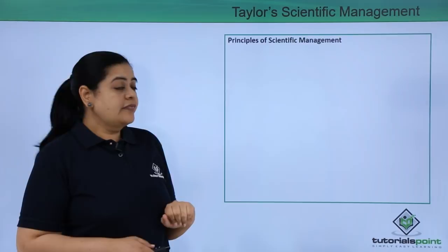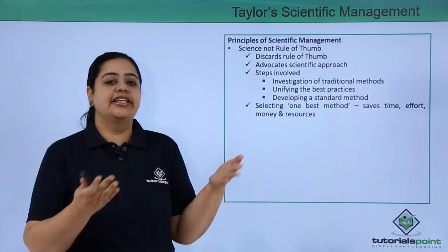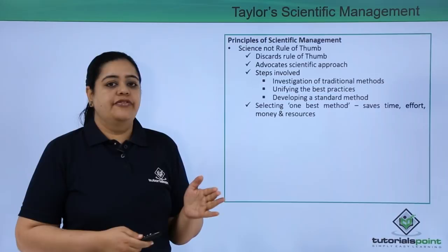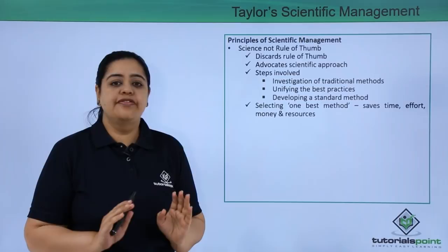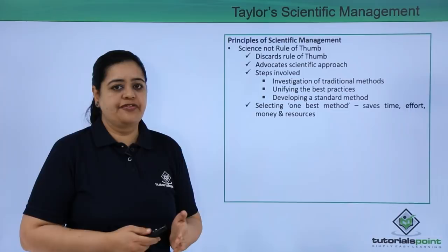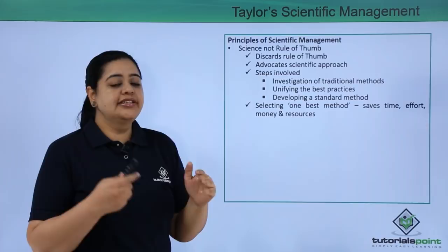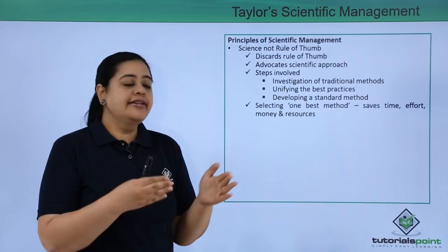Now, let's see the principles of scientific management. The first principle is: science, not rule of thumb. Earlier, rule of thumb had limitations. Mr. Taylor was totally against it — he said science is not rule of thumb. So he discarded this rule of thumb theory, saying it is sheer waste of time and effort and increases your cost. He advocated a scientific approach instead, saying you need to investigate the traditional methods which are there, find out the best practices, and then develop a standard method.